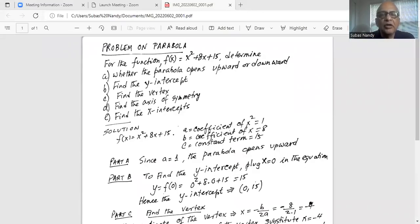This is a problem on parabola. For the function f(x) is given as x squared plus 8x plus 15. Determine whether the parabola opens upward or downward. Find the y-intercept. Find the vertex. Find the axis of symmetry. Find the x-intercepts.